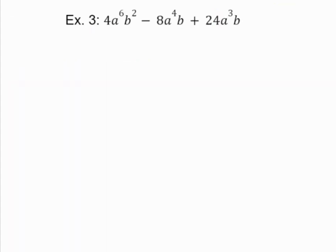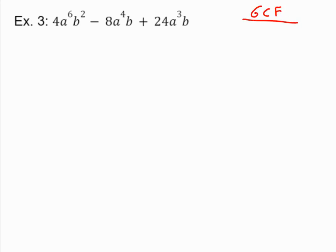One more example to look at. So one thing you might notice that's different in this example is that I have two variables instead of one. That doesn't really matter. It still works the same way. So let's start by finding our GCF. So I've got 4, 8, and 24. Well, the GCF of 4, 8, and 24 is 4. They all have an a, so my GCF is going to have an a. And my smallest exponent for a is 3. They all have a b, so my GCF is going to have a b. And my smallest exponent is 1, or not having an exponent. So my GCF is 4a cubed b.